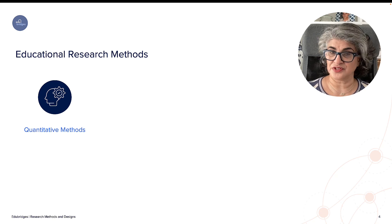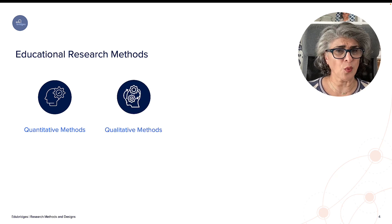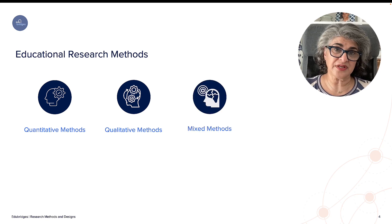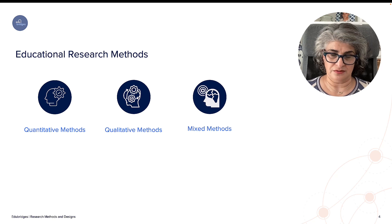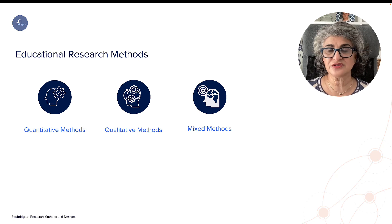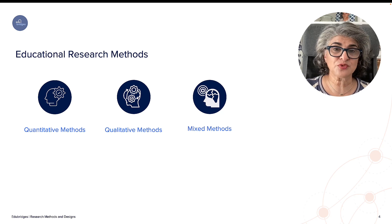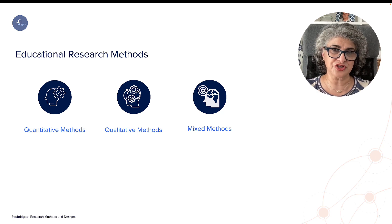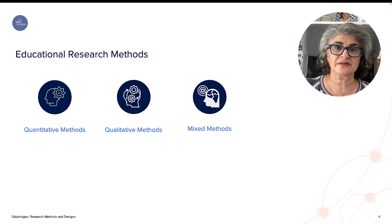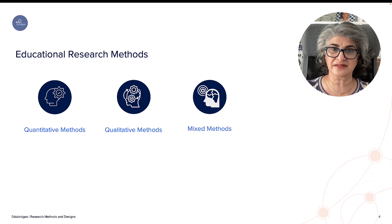The first one is quantitative research, quantitative methods, qualitative methods, and mixed methods. From my experience, most graduate students talk about quantitative and qualitative and know that quantitative is numbers and qualitative is words and feelings. However, when it comes to the specifics, I've noticed that the differences are not very clear-cut and many graduate students struggle with the differentiation between them, more on the application and practice of things and the research questions that come with each.